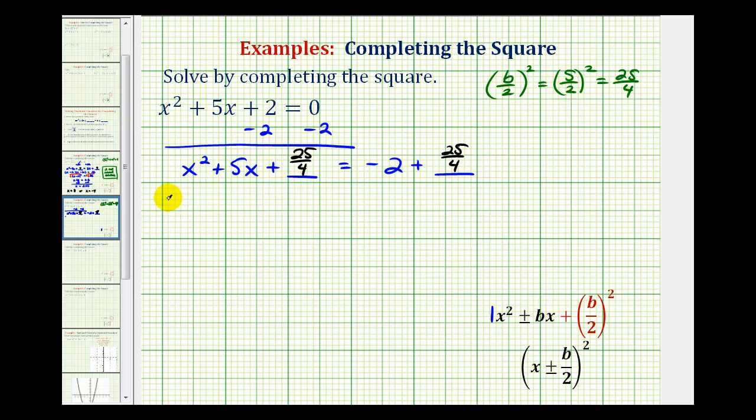which means this factors into (x + 5/2)(x + 5/2), since x and x are the factors of x², and the factors of 25/4 that add to 5 are 5/2 and 5/2. On the right side, -2 equals -8/4.